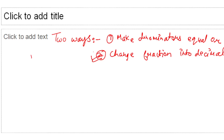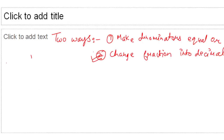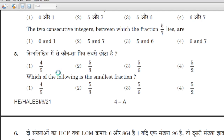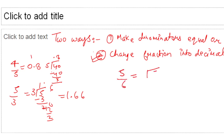The faster method is to change the fractions into decimals because we have to complete the paper on time. Your first fraction is 4 by 5, which equals 0.8. Your second fraction is 5 by 3 — calculating: 1.66. Your next fraction is 5 by 6 — calculating: 0.83.